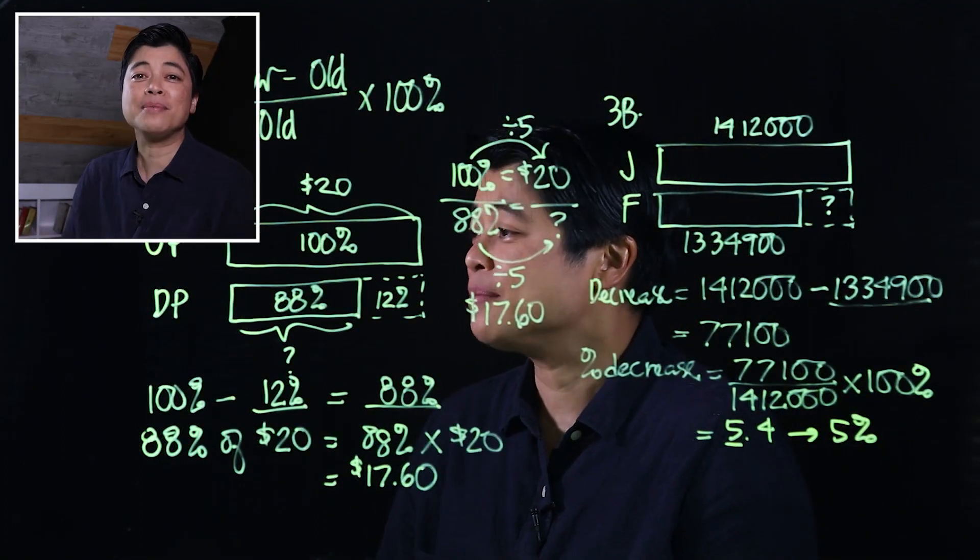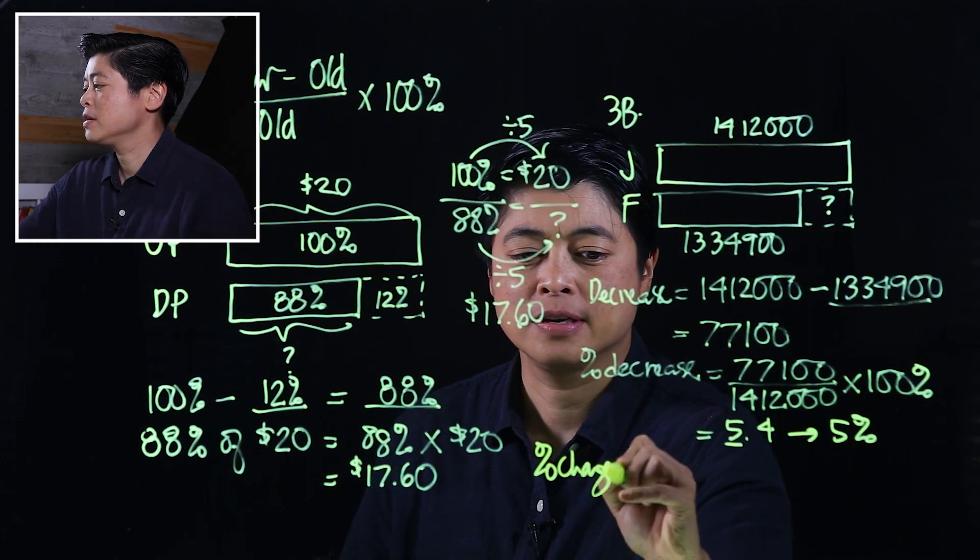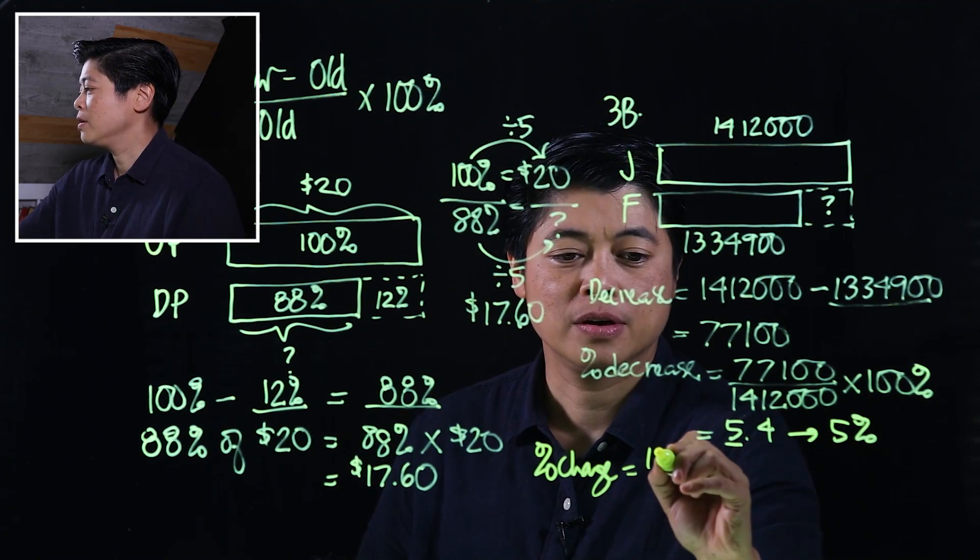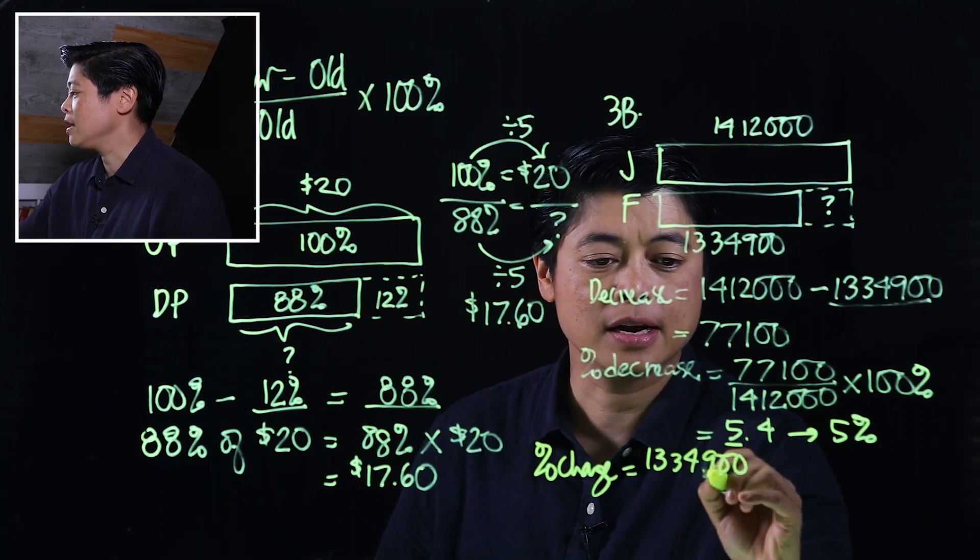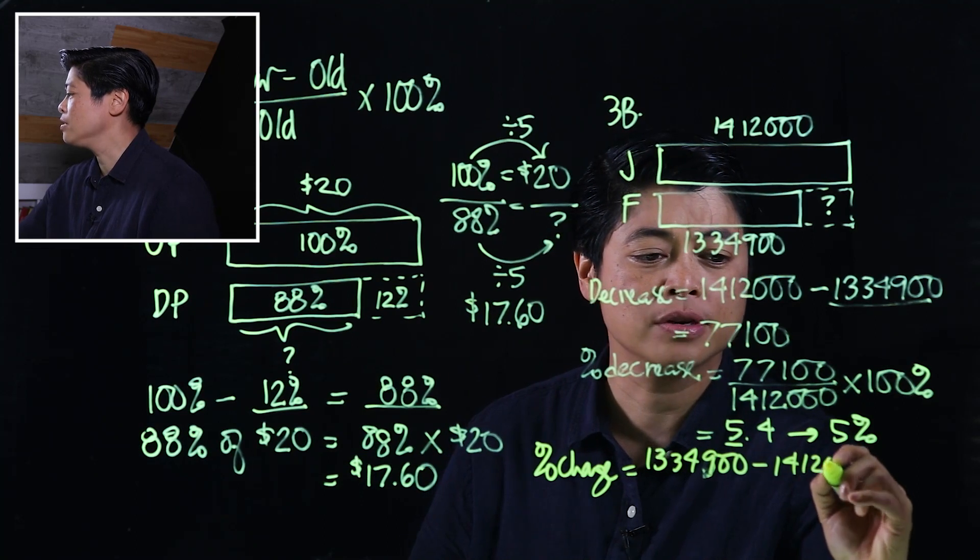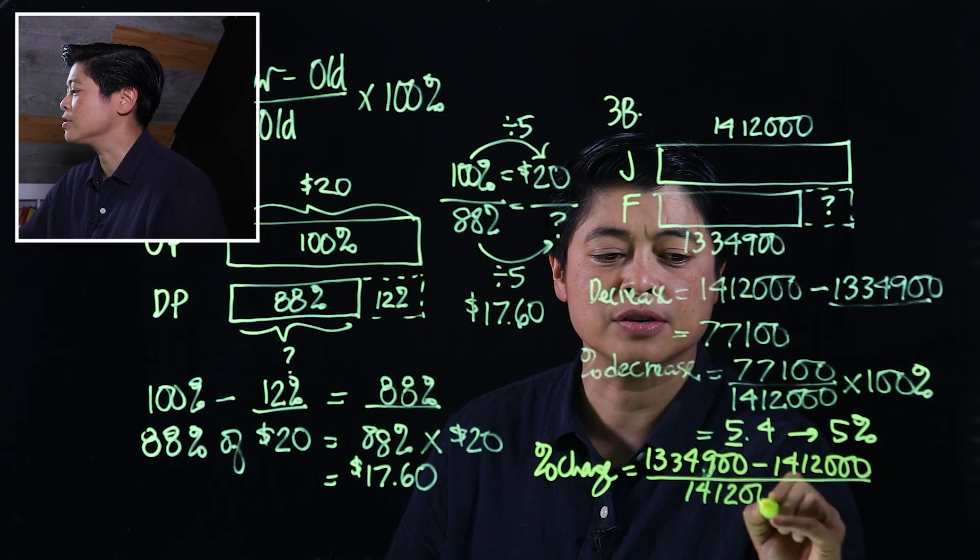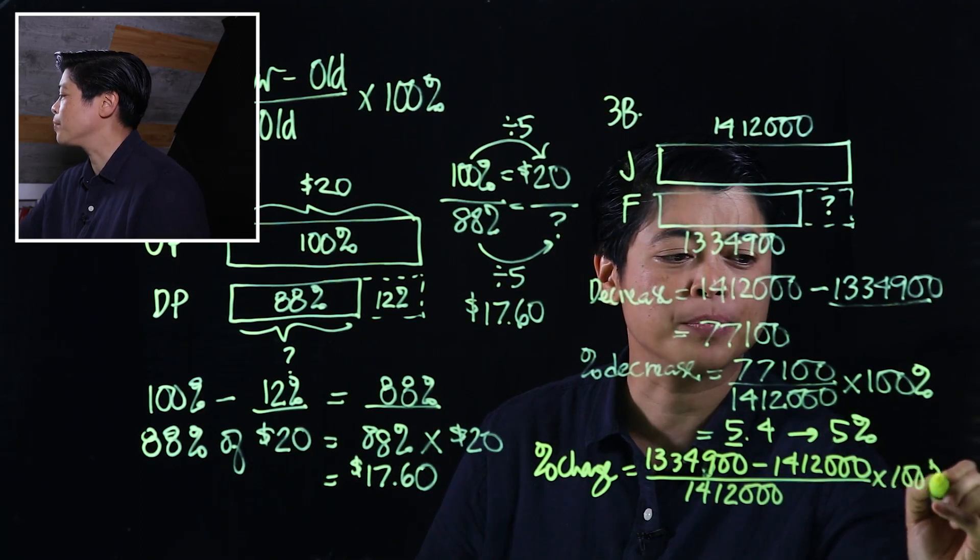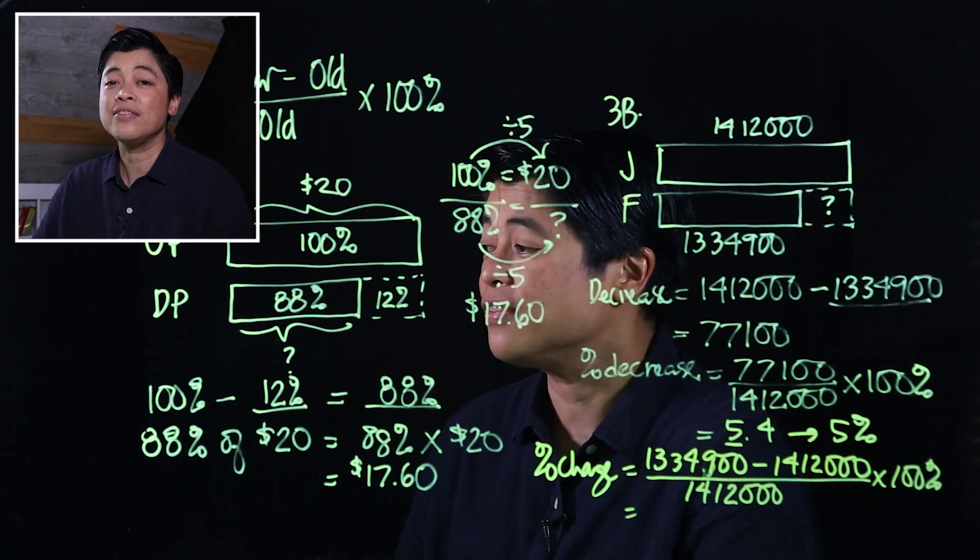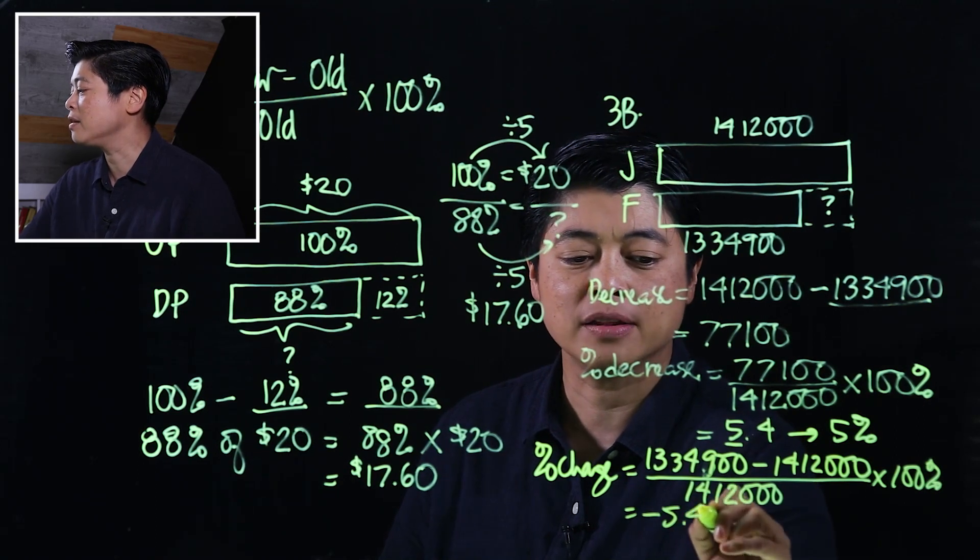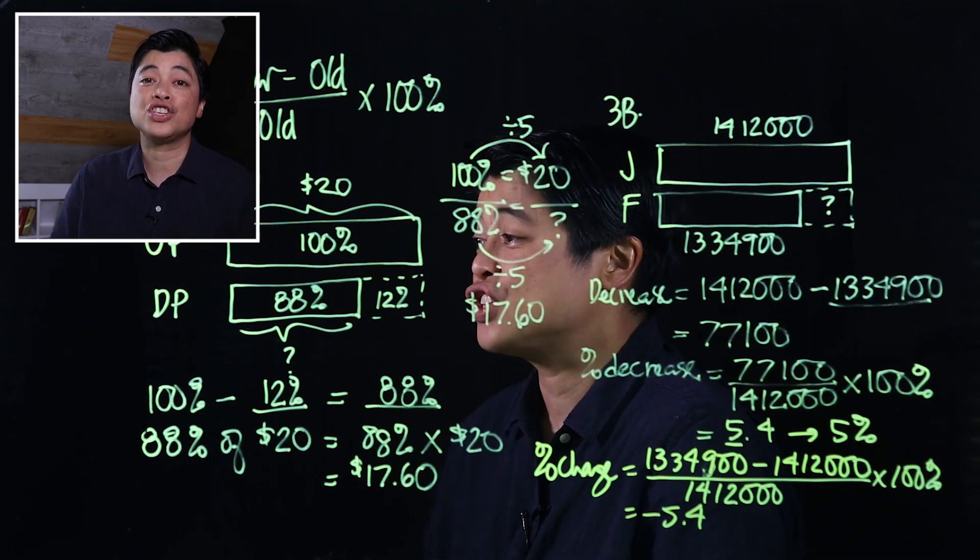Now if we do it my approach, percent change would be new 1,334,900 minus 1,412,000 divided by 1,412,000 times 100 percent. So again, if we put that in our calculators, our calculator will give us a negative 5.4, which means it's a decrease because it's a negative change.